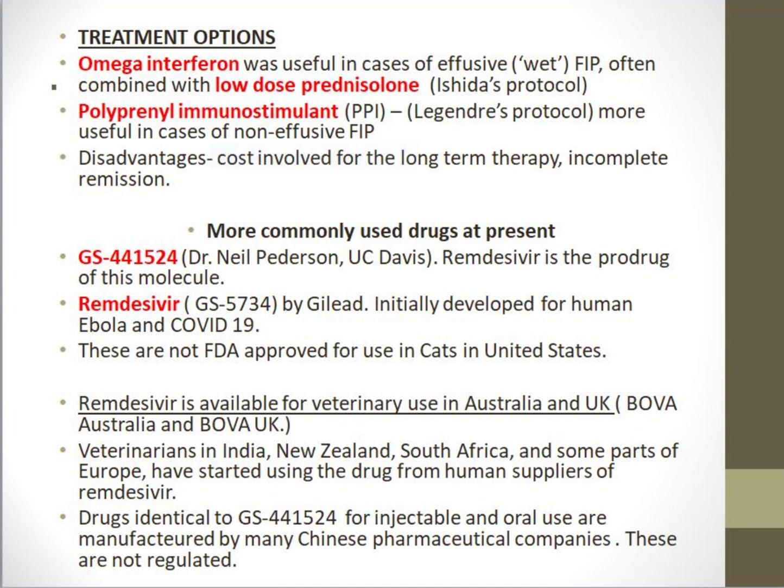Along with low-dose prednisolone, this was called Shida's Protocol, mostly given for the effusive or wet form of FIP. There was also a treatment involving the polyprenyl immunostimulant (PPI), given for the non-effusive form of FIP. However, both treatments had the disadvantages of high cost, long duration of therapy, and incomplete remission of the disease.